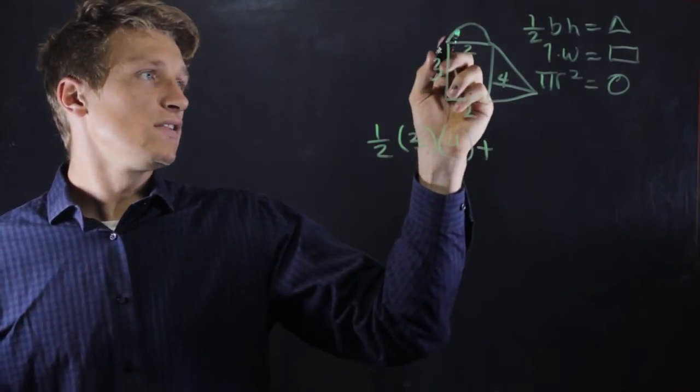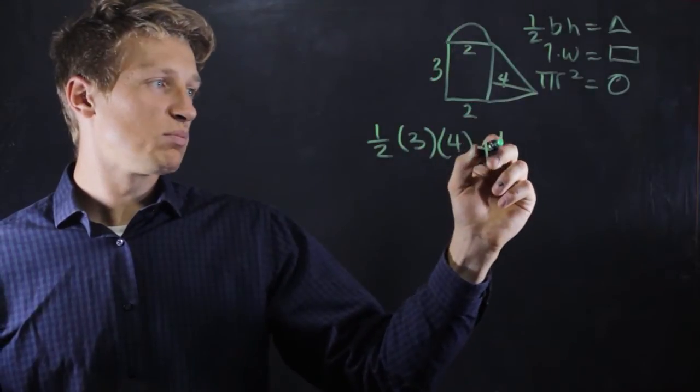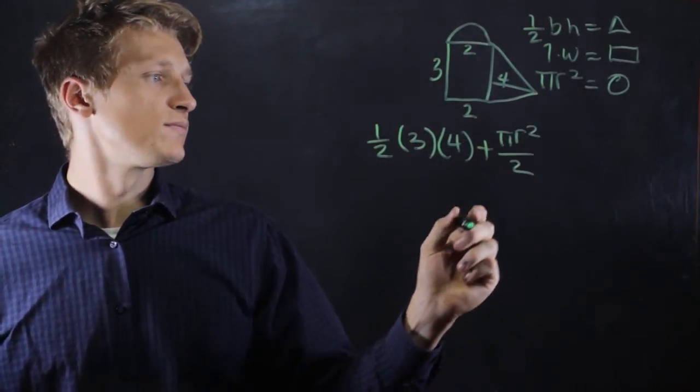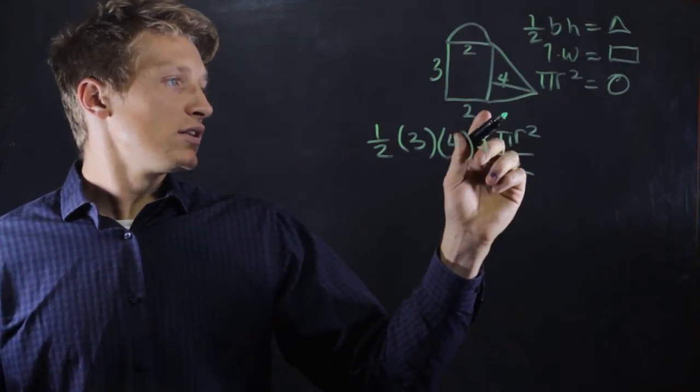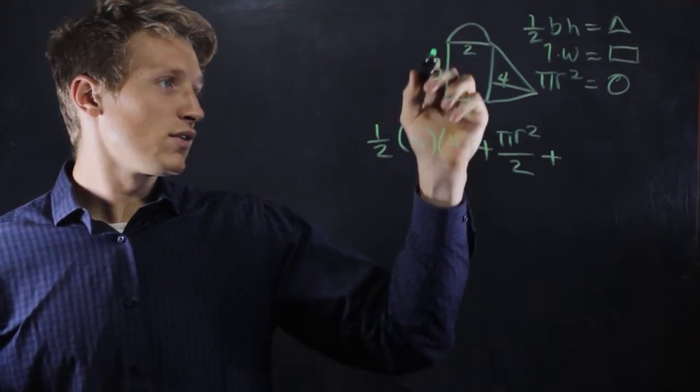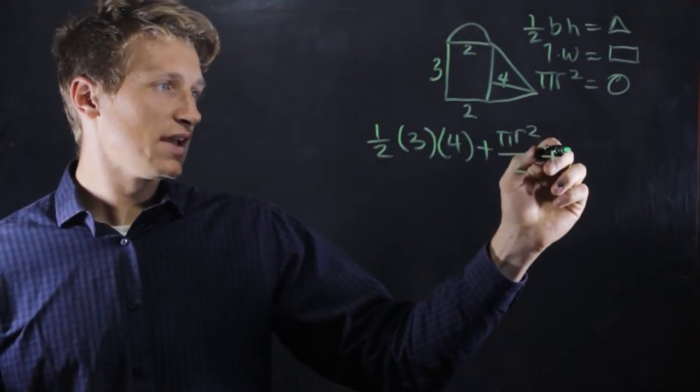Add that to the area of this half circle, which is pi r squared divided by 2. Let's plug in the numbers later. And the area for the rectangle is length times width.